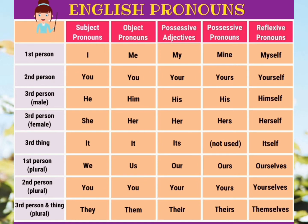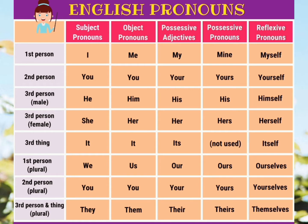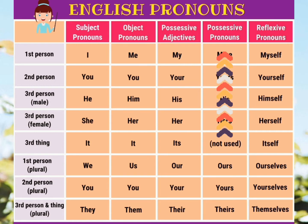Let's recall the English pronouns and skim this slide. In English, we have the subject pronouns that replace the subject nouns, and the object pronouns that replace the object nouns. We also have the possessive adjectives, which describe to whom something or someone belongs, and the possessive pronouns, which work mostly like the possessive adjectives.